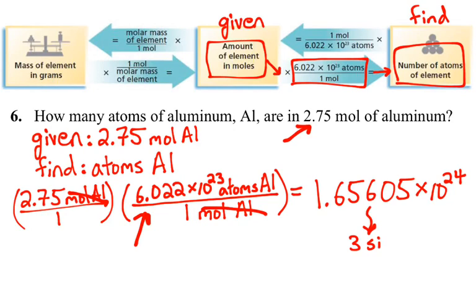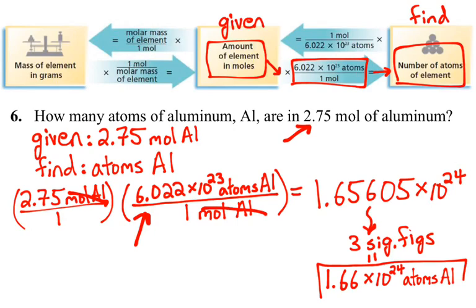So we have to go with the smaller number, which is three significant figures. And that would round our answer to 1.66 times 10 to the 24 atoms in 2.75 moles of our substance.